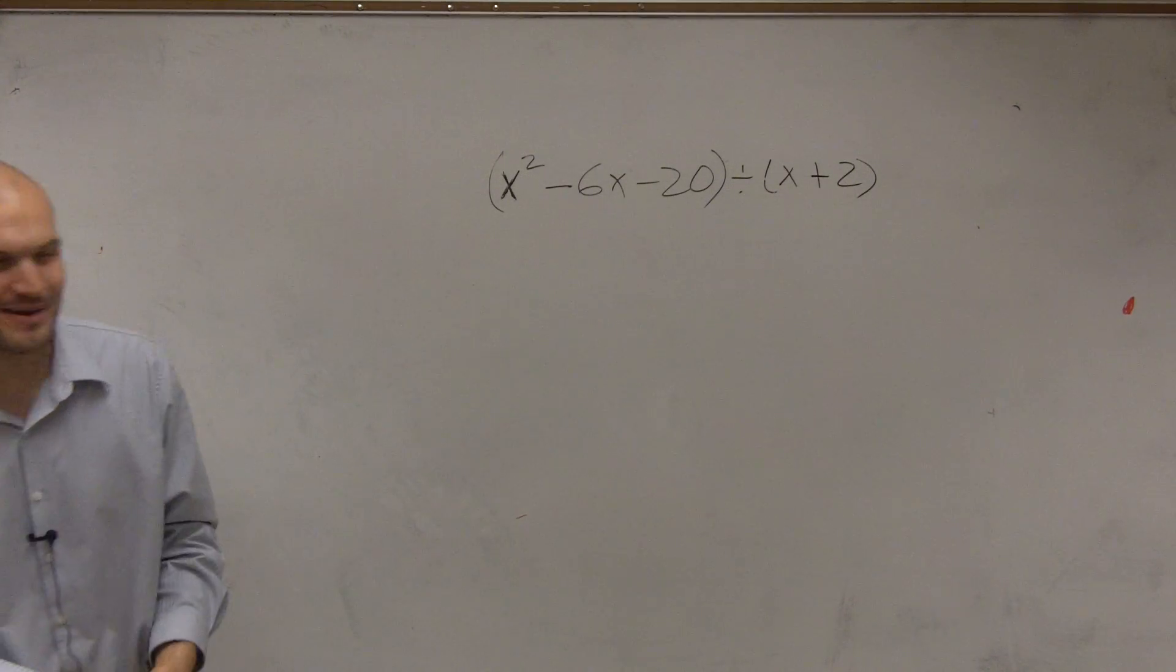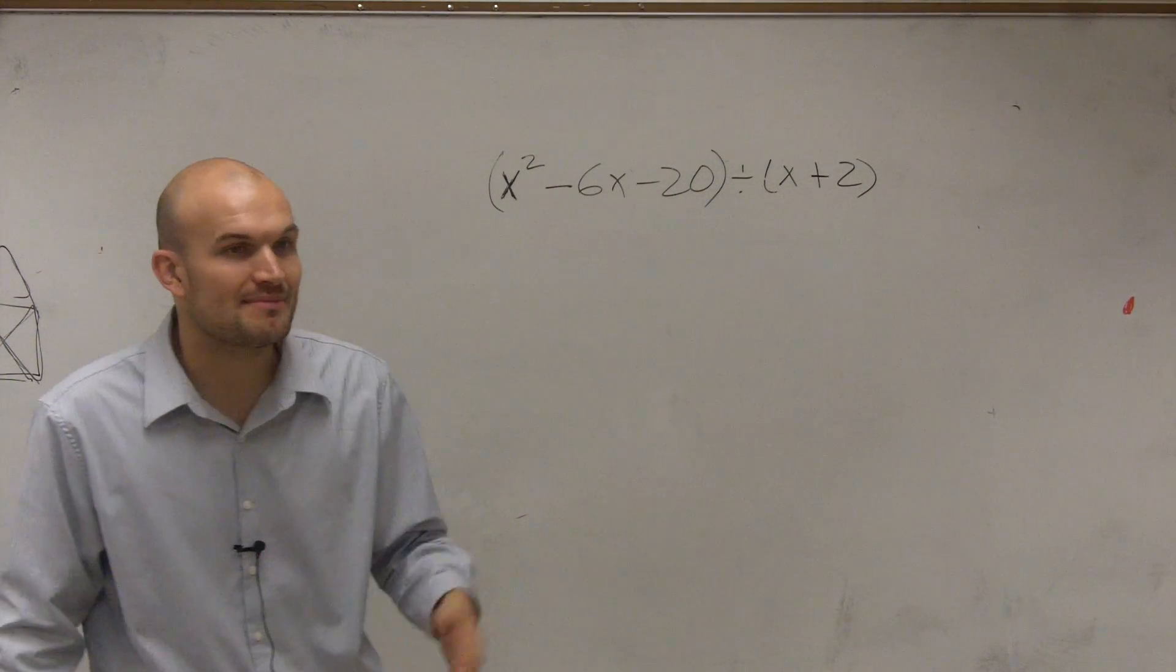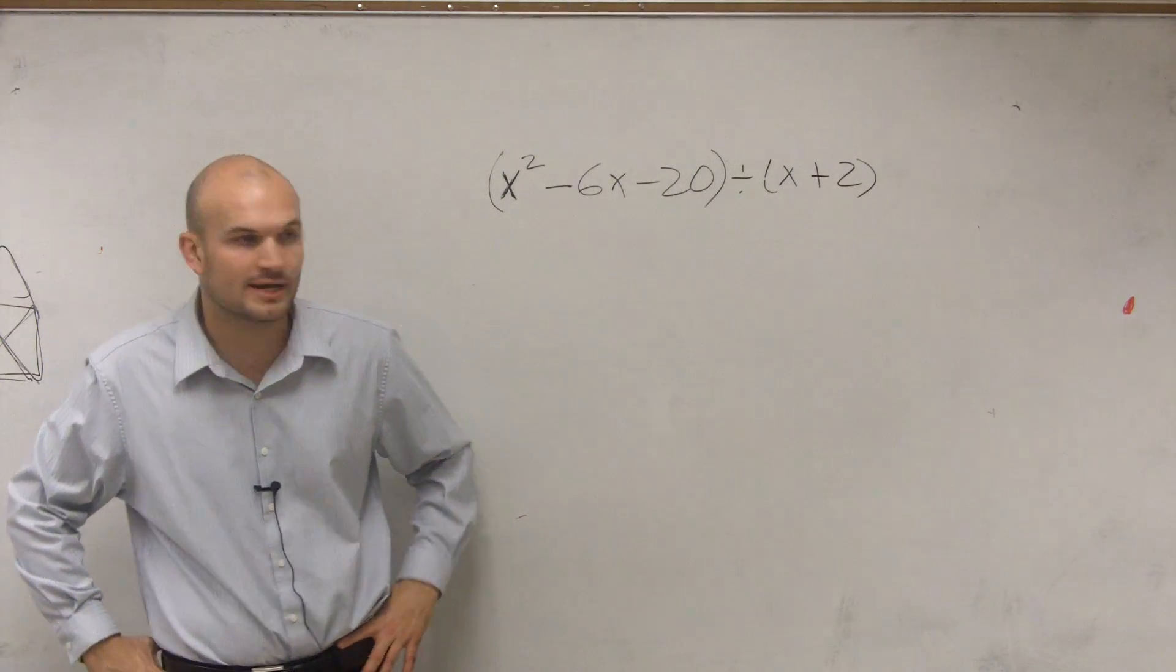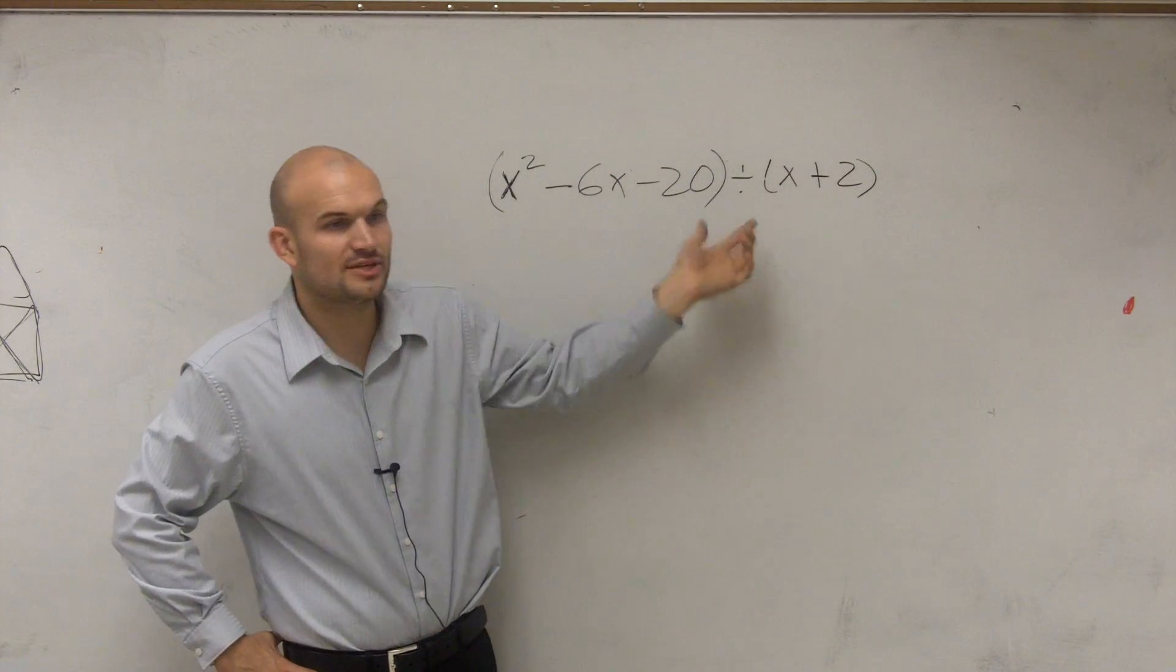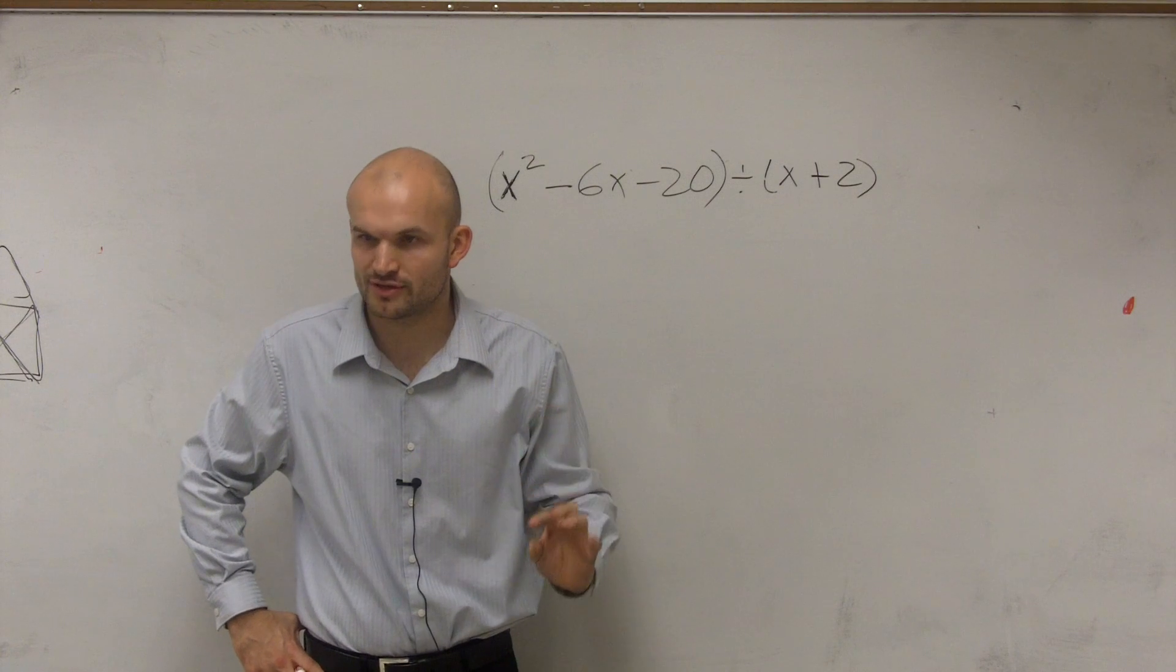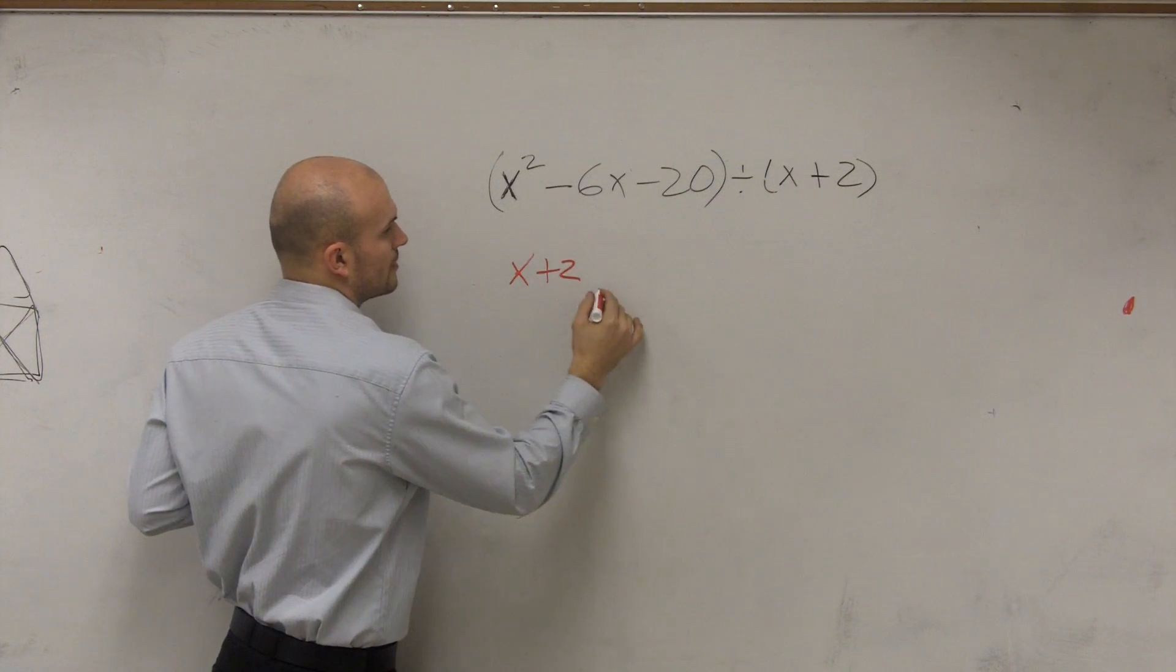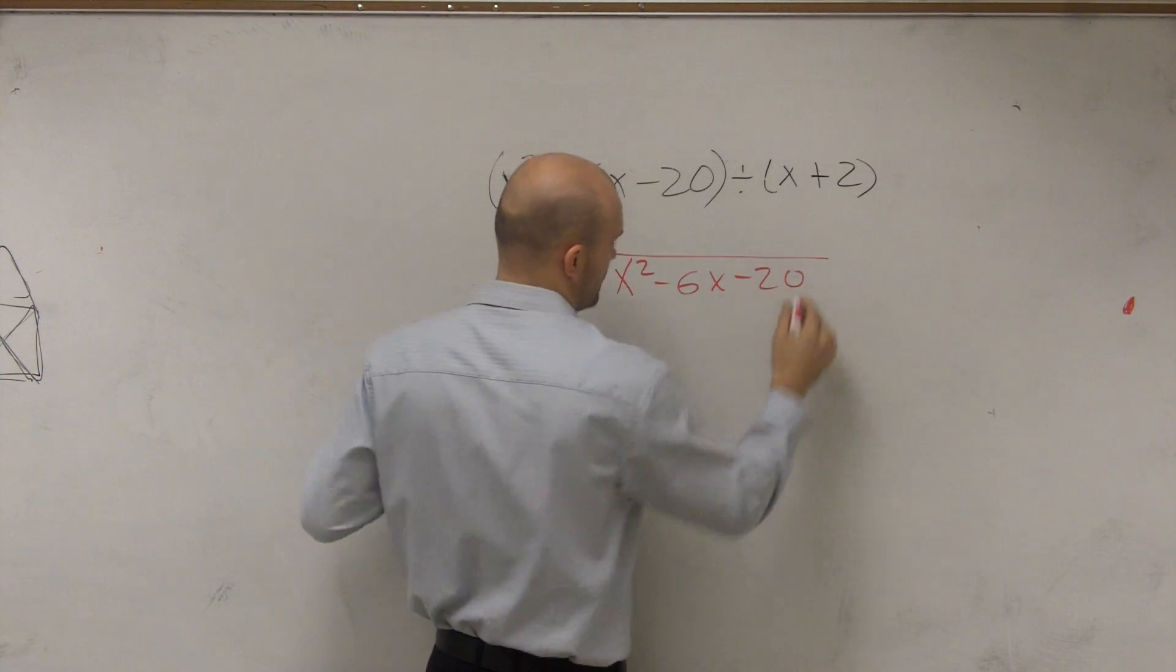Let's say we have x squared minus 6x minus 20 divided by x plus 2. So this is a simple division problem. What we're going to do for this problem is we're going to follow the division algorithm. We're dividing not by a monomial anymore, so we can't simply just break this up like we did in the last example. We're going to make it look like our division problem: x plus 2 divided by x squared minus 6x minus 20.